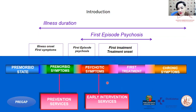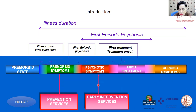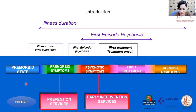After the first treatment, unfortunately, sometimes some patients can develop chronic symptoms, as you know. So we now intervene after the first psychotic symptoms, and we want to intervene in this premorbid symptoms state with a prevention service, and it is called PREDAP. We will talk about it later.